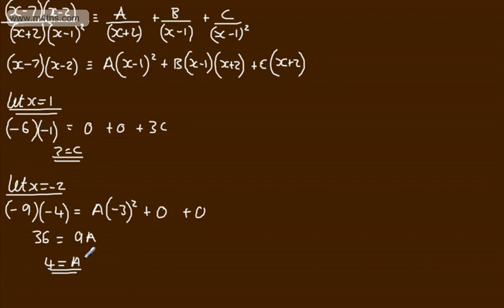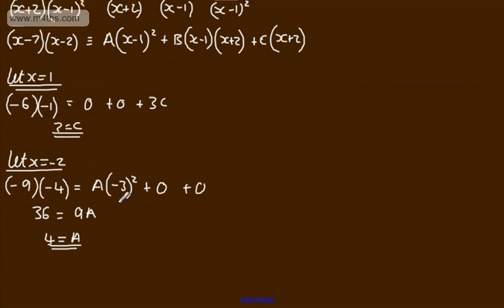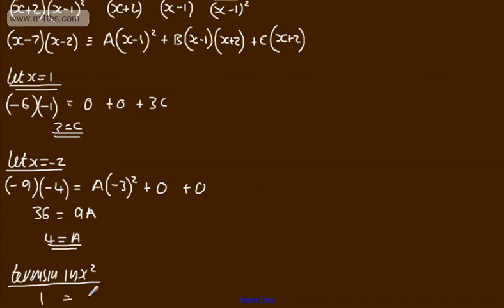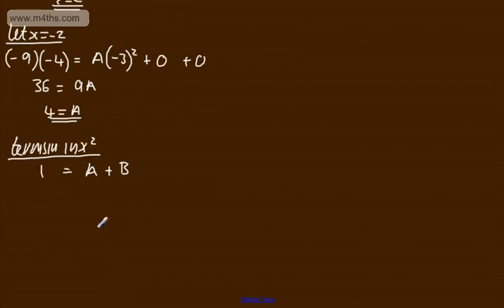We now need to find B, and I'm going to do this using simultaneous equations by looking at the terms in x squared. On the left-hand side we have 1, and on the right-hand side we have a plus b. Since a equals 4, we get 1 equals 4 plus b, so b equals minus 3.